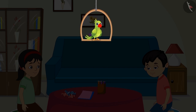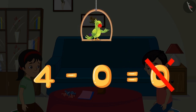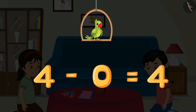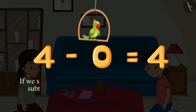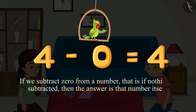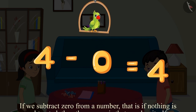So children, out of the four toffees Pinky did not give even a single toffee to Chotu. This means she gave only zero toffees. We can also write this as: can you tell me the answer? The answer will be four. This means four minus zero equals four. If we subtract zero from a number — that is, if nothing is subtracted — then the answer is that number itself.